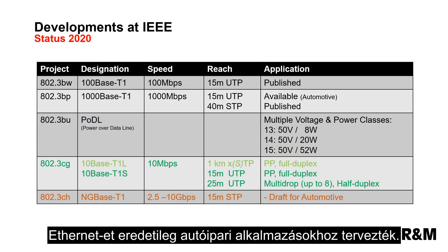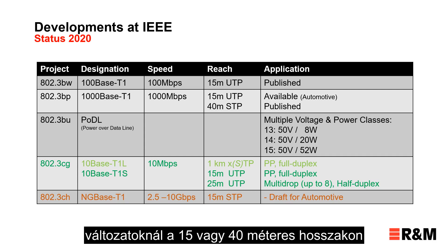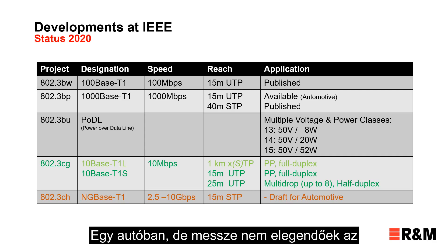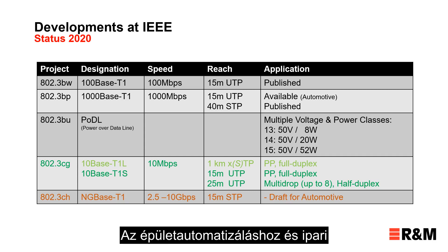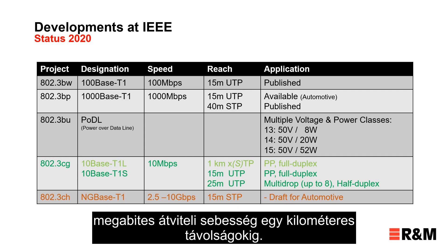Single-pair Ethernet was originally designed for automotive applications. We can still see that in the specification of the 100 megabit and 1000 megabit variants with reaches of 15 or 40 meters for unshielded or shielded cable. This is enough for a car but would not reach far enough in a building environment. For building and industrial automation, IEEE defined the 10BASE-T1, a 10 megabit transmission speed for distances up to one kilometer.